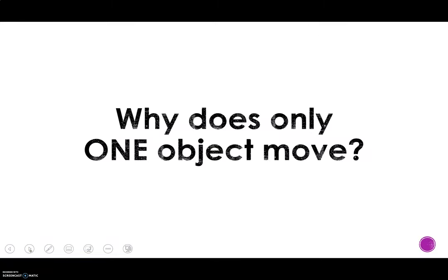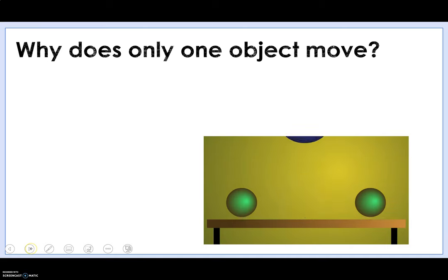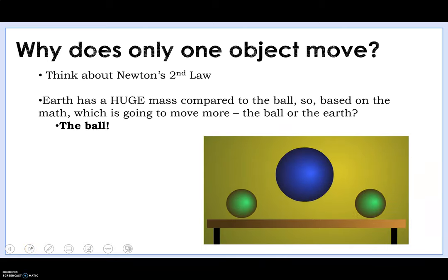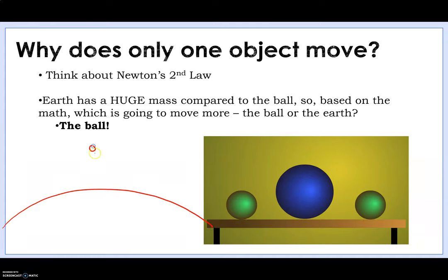So why do we only see one object move? Let's think about this example with the ball. So earth has a really large mass, right? If here's earth and here's the ball it's trying to pull down, if the ball is pulling earth towards it with the same amount of force, we're not going to see the earth move because it's so much bigger than the ball, right? It all has to do with the mass. We're not going to see the giant planet earth move just because a ball is pulling it towards it a little bit. And so the ball is going to move more. That's your answer in the blank on your worksheet.